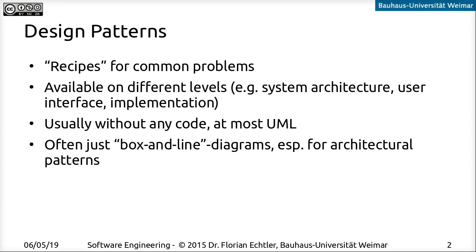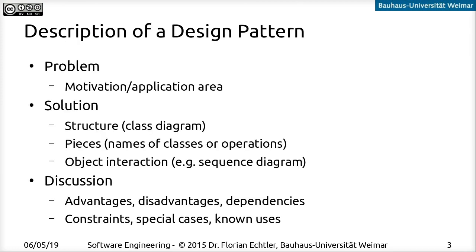For the architectural patterns, you'll often see just the very simple type of box and line diagram, which isn't even strict UML or anything like that, just a really high level rough sketch of how the individual major components of the system relate to each other. For most design patterns, you'll find some of the following aspects in the description, especially if you're looking into the so-called Gang of Four book. We're going to talk about that later.